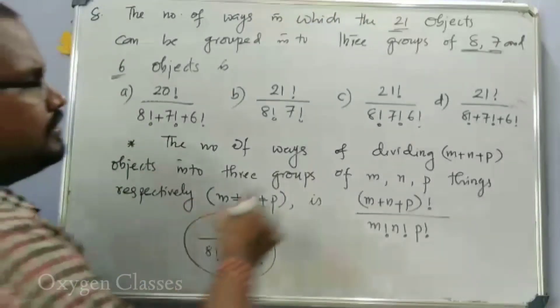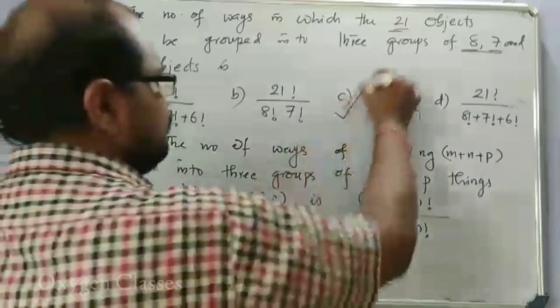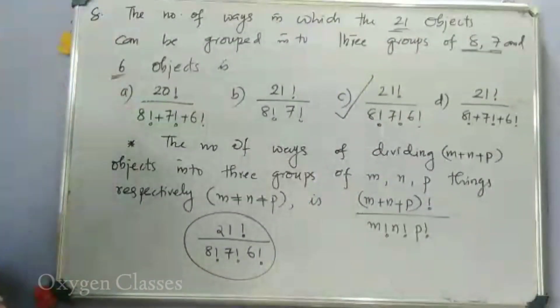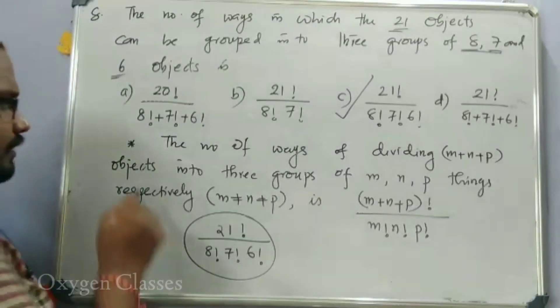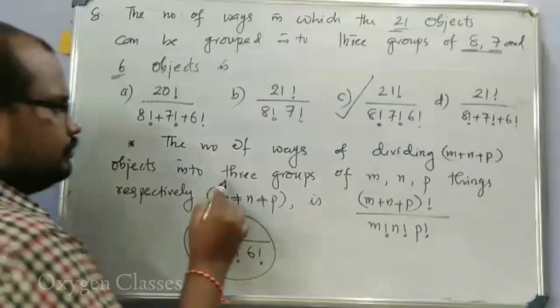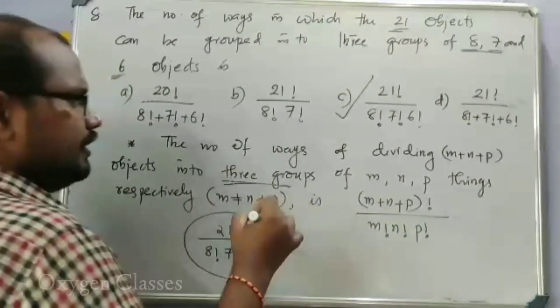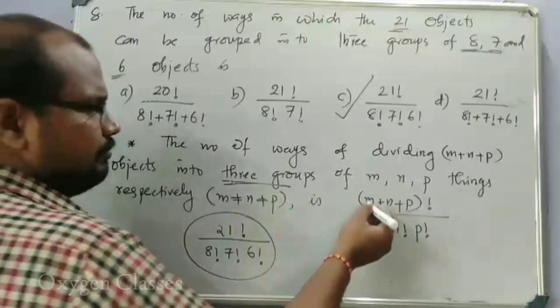Using the formula directly, we divide 21 objects into three groups and write the answer as 21! over 8! times 7! times 6 factorial.